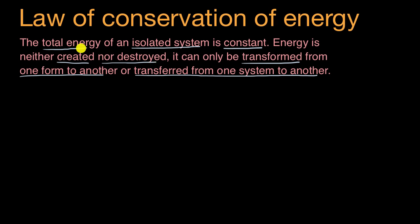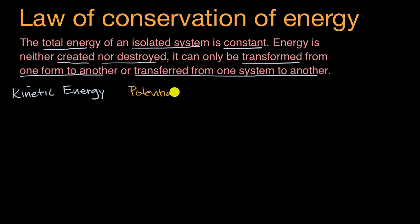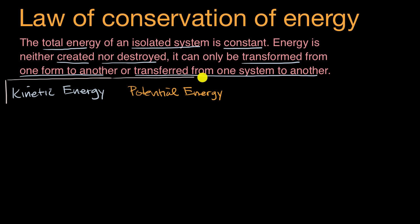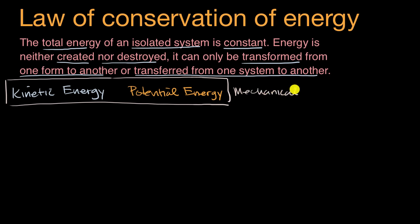To understand this, let's think about the types of energy we have studied. We have kinetic energy, which is the energy due to an object's motion. We have potential energy, which is energy due to an object's position — that would be mechanical potential energy. If you combine these two types of energy together, they're known as mechanical energy.